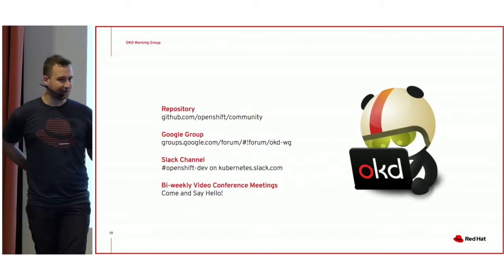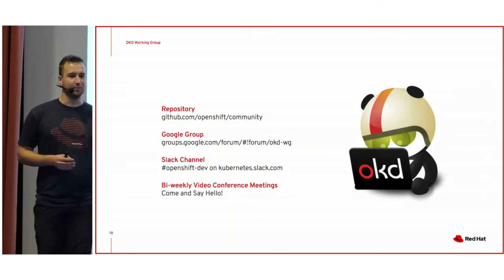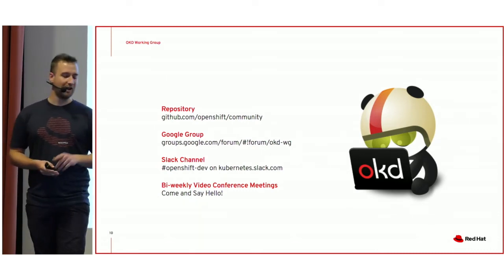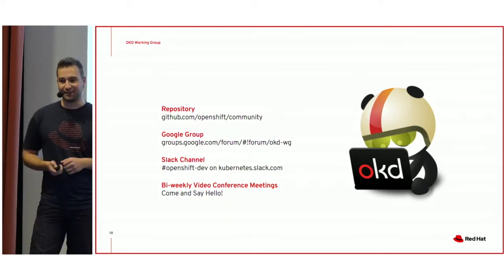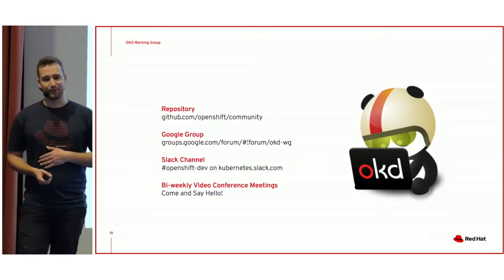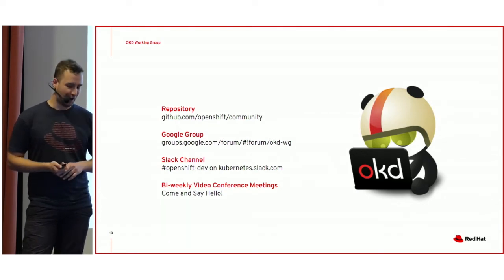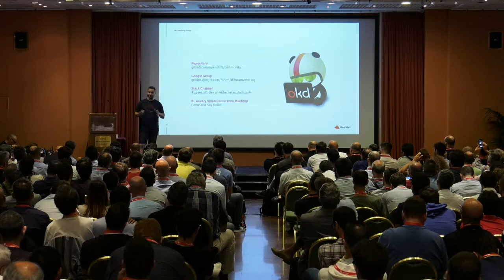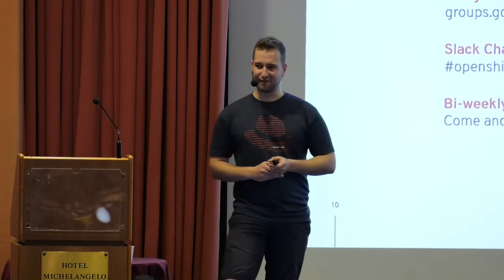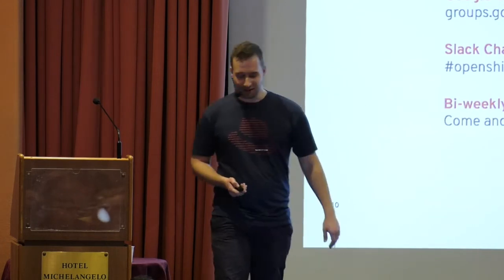We also have a Google Group which serves as our mailing list. We'll make sure to always send out information on the other mailing lists — the OpenShift users and OpenShift dev mailing lists — as well, but this one is really a bit more focused on the OKD 4 effort right now. You're also invited to join that group. We have a Slack channel as well, which is the OpenShift dev channel on the Kubernetes Slack. We also have a bi-weekly meeting which you're invited to join.